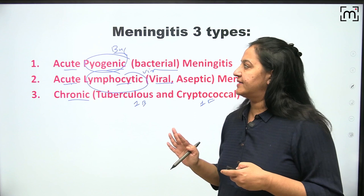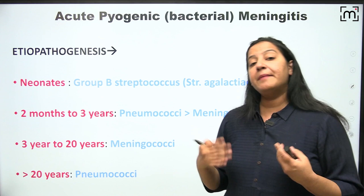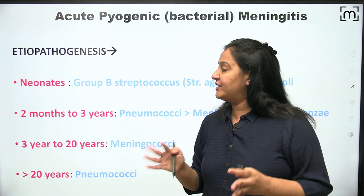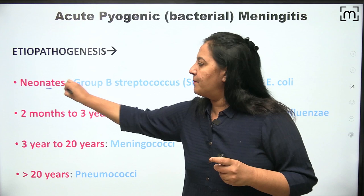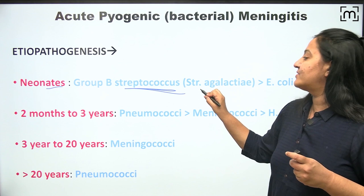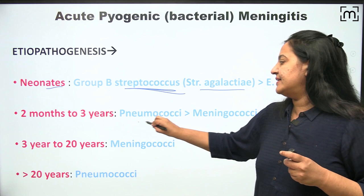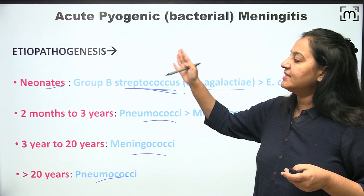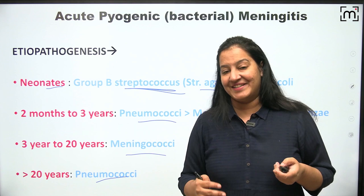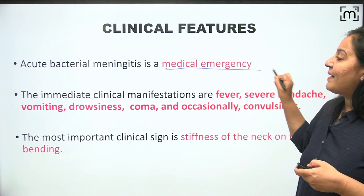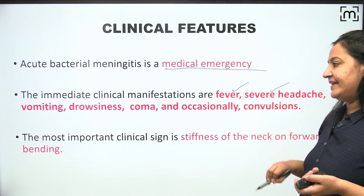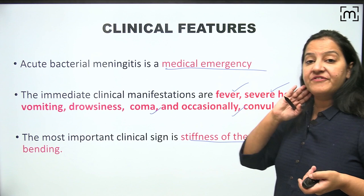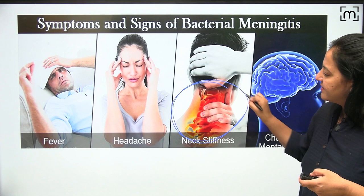In acute bacterial meningitis, the causative organism differs by age. In neonates: Group B Streptococcus (S. agalactiae). From 2 months to 3 years: Pneumococci. From 3 to 20 years: Meningococci. From 20 years onwards: Pneumococci again. Clinically it is a medical emergency — patient presents with fever, severe headache, coma, occasional convulsions, and neck stiffness.